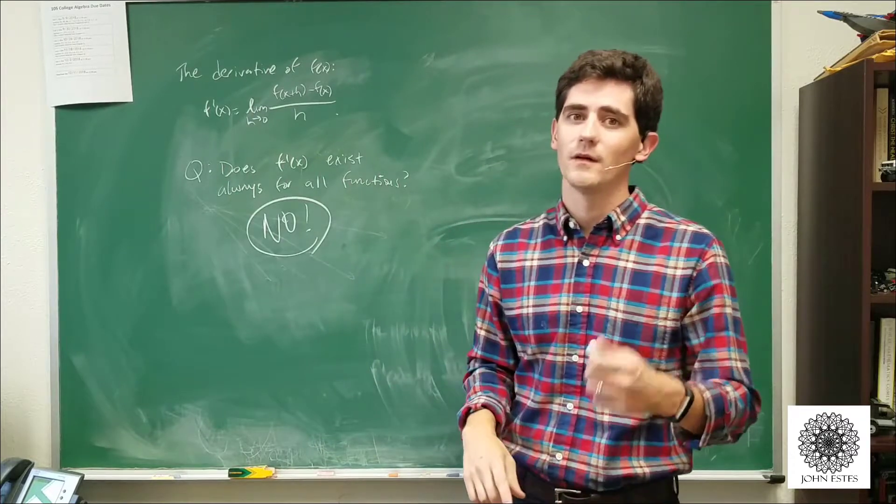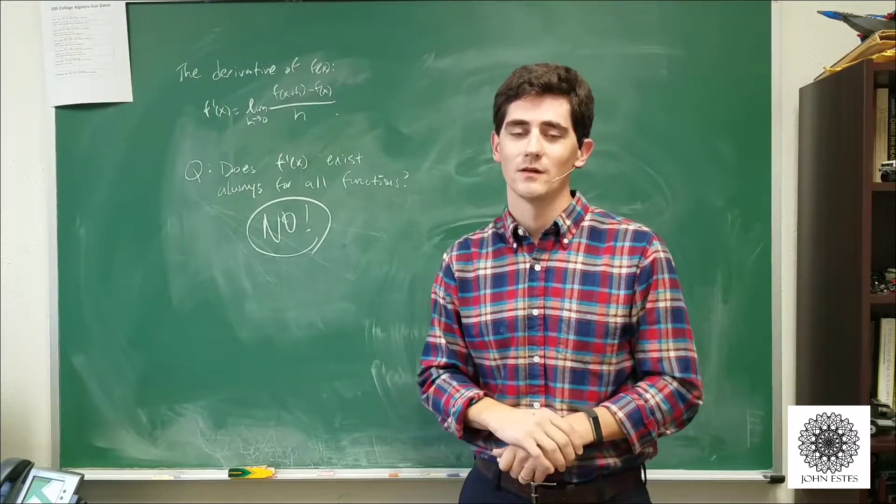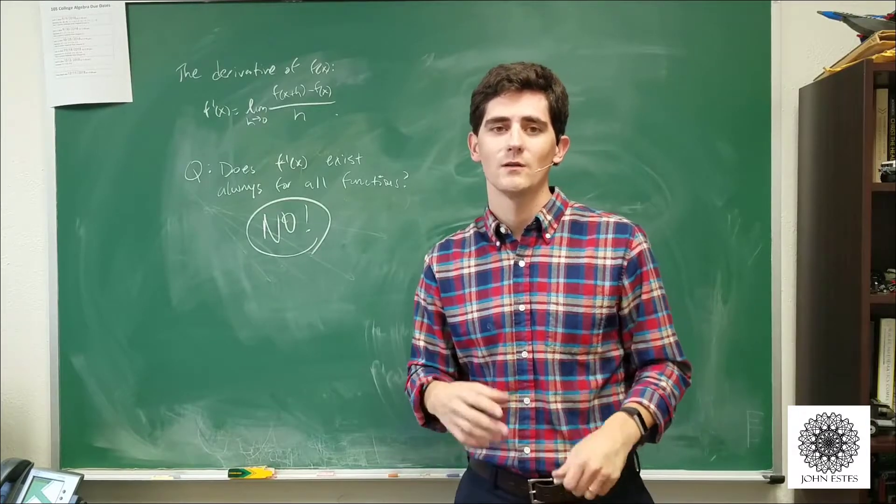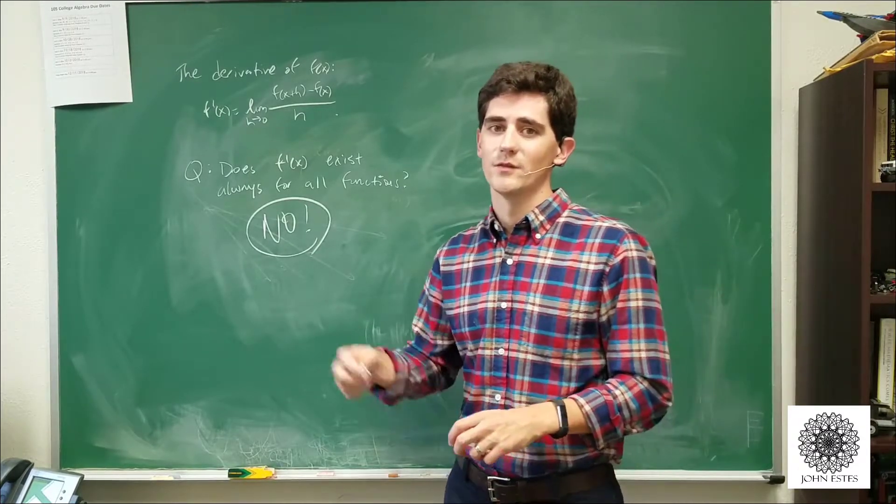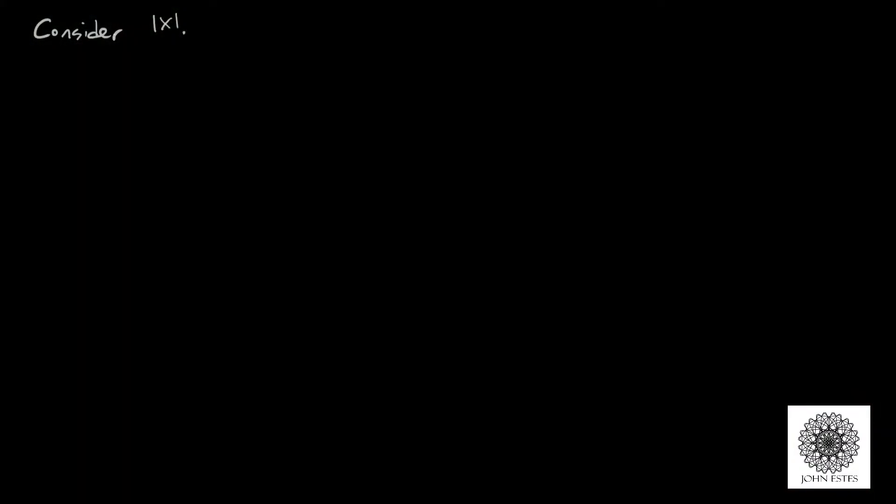So I'll show you a very common example that shows that there's no derivative at a certain point, and then we'll talk a bit more about differentiability and where the derivatives exist. So as an interesting example in the existence of a derivative, let's consider the absolute value of x.